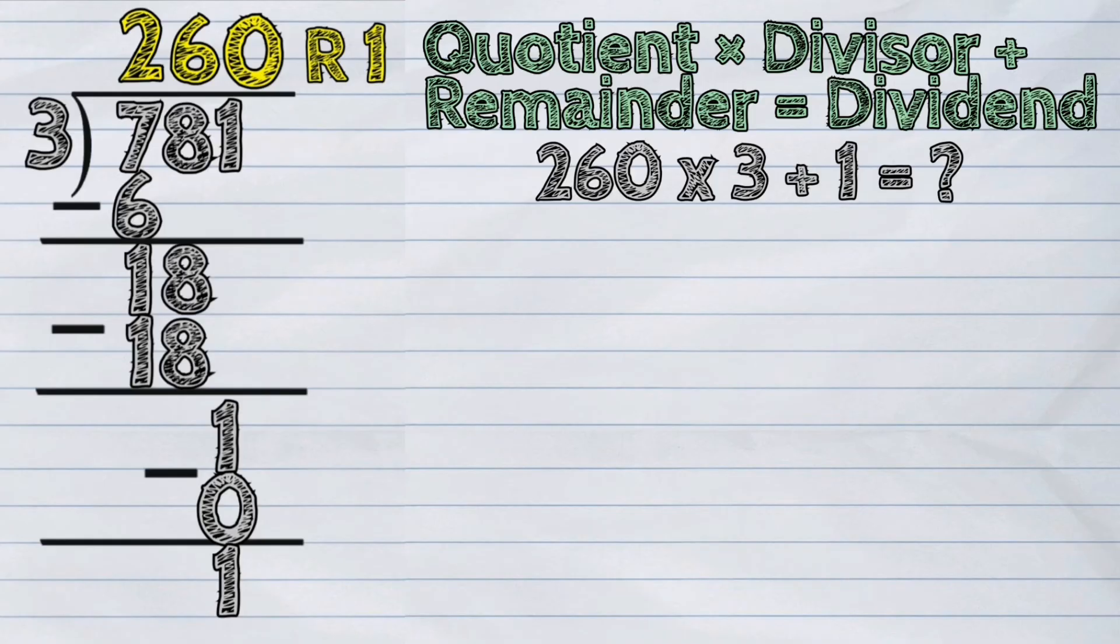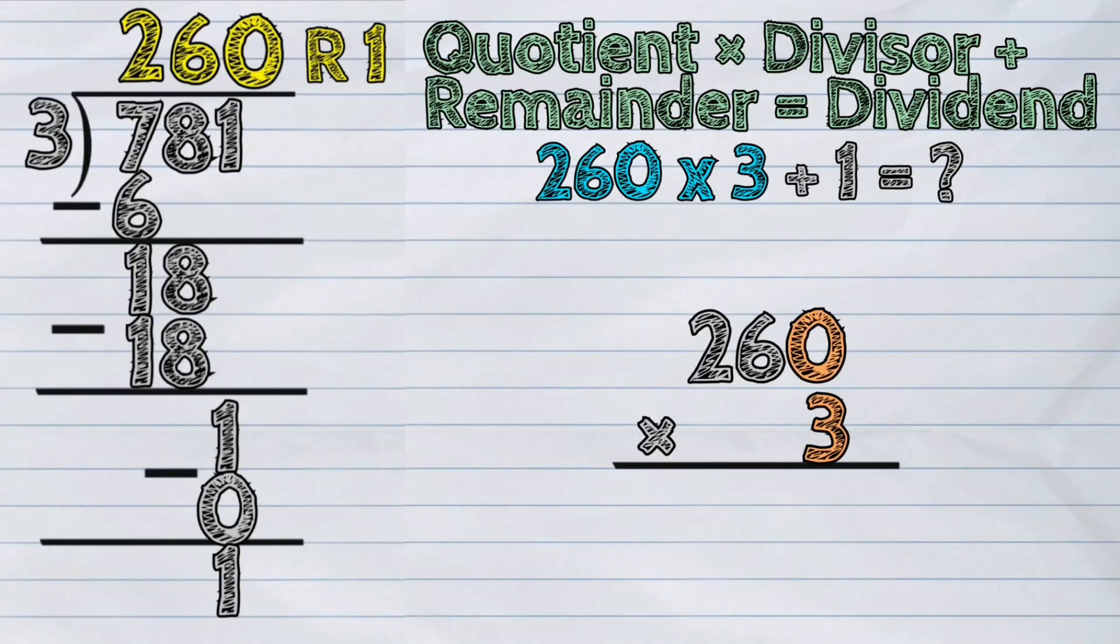260 times 3 plus 1. Let's do the multiplication first. 3 times 0 is 0. Next, 3 times 6. The answer is 18. We write 8 in the tens column and regroup 1 in the hundreds place. 3 times 2. The answer is 6. Then, add 1. This gives the answer of 7.